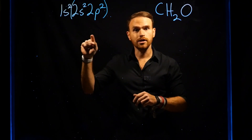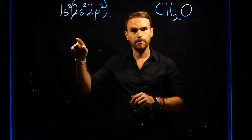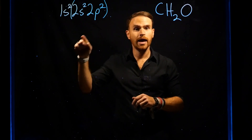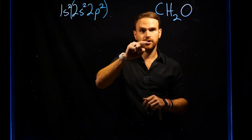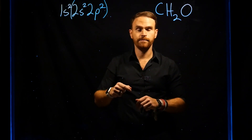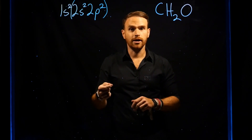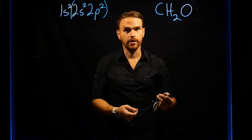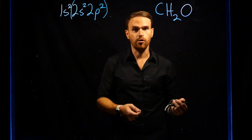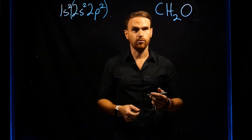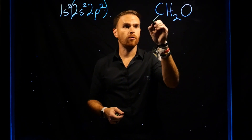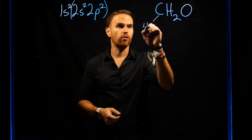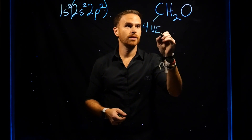Start on the left-hand side of the periodic table and count over until you get to carbon. You would see that carbon is the fourth element on the second row of the periodic table, so carbon has four valence electrons.